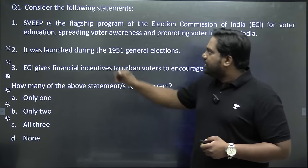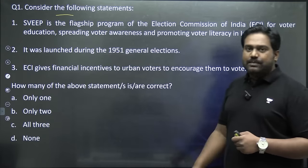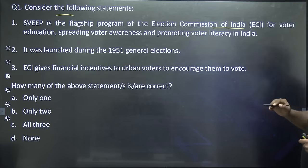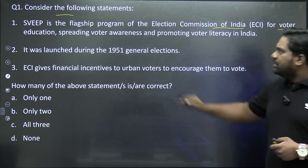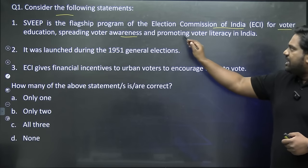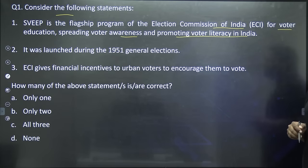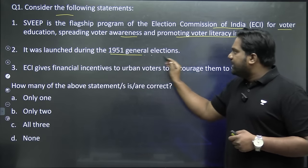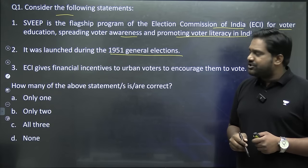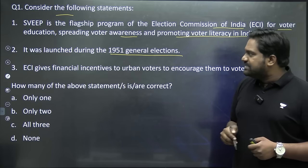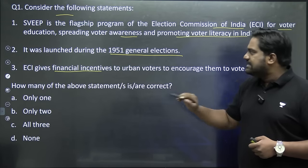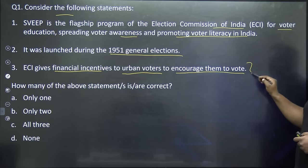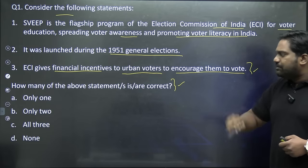Let's begin with the first question. Consider the following statements. SWEEP is the flagship program of the Election Commission of India for voter education, spreading voter awareness, and promoting voter literacy in India. The second statement says it was launched during the 1951 general elections. The third statement says ECI gives financial incentives to urban voters to encourage them to vote. How many of these statements are correct?